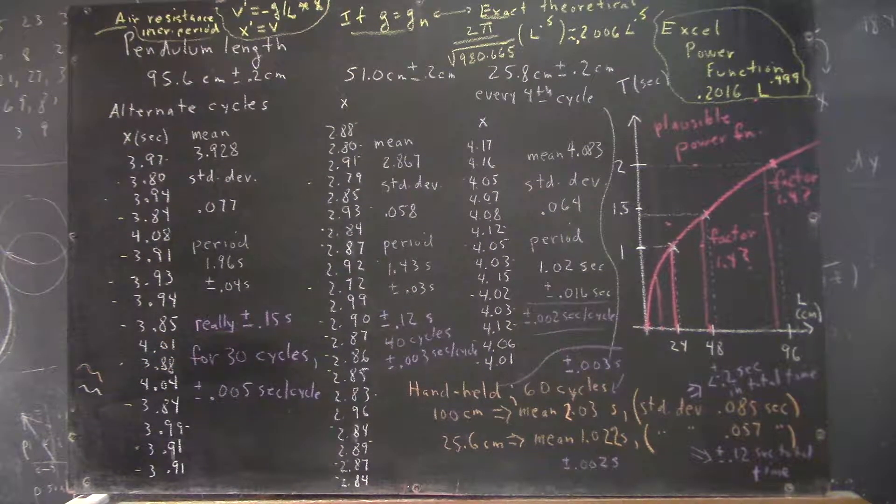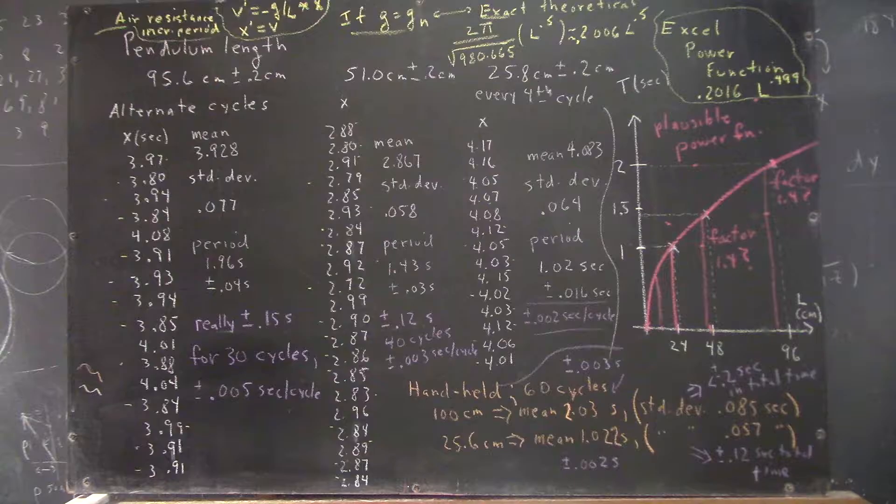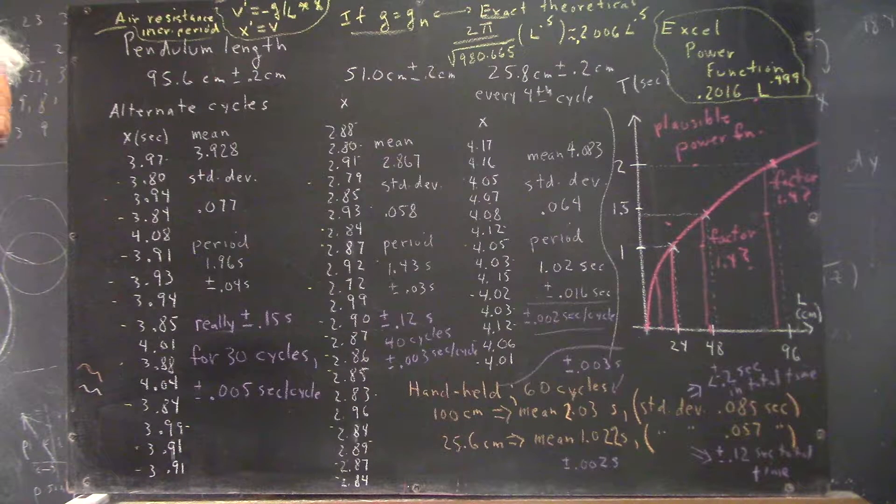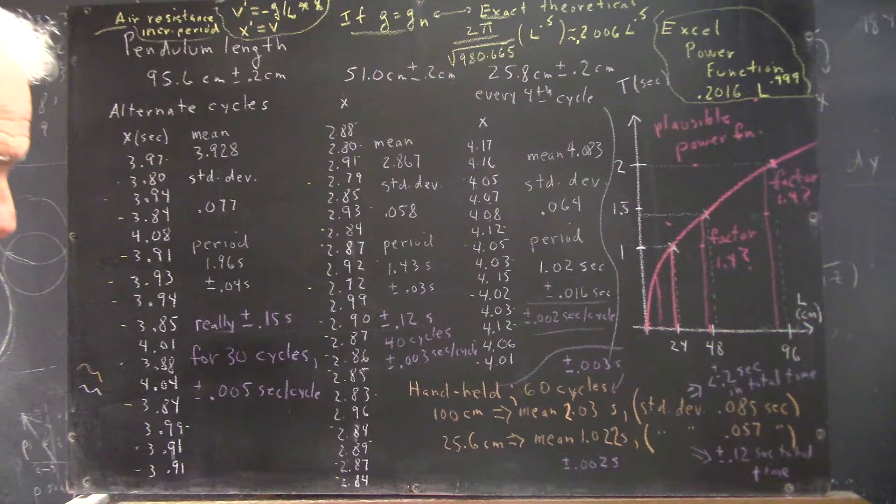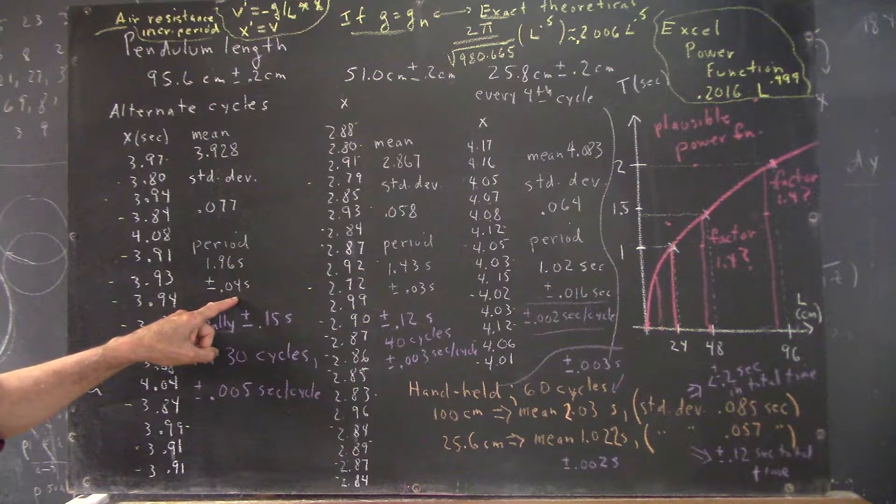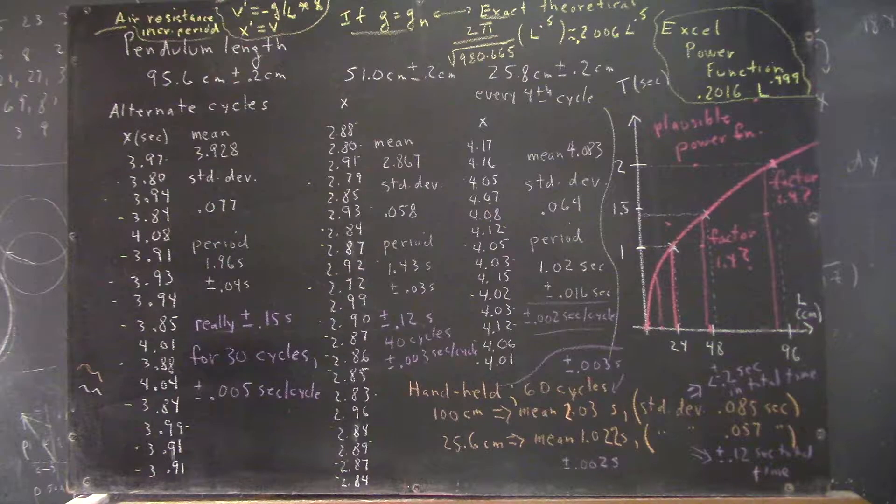Now, we can actually, for the amount of data that we took here, use what's called the variation of the mean, the standard deviation of the mean, and reduce that 0.04 seconds to something around 0.01 seconds.